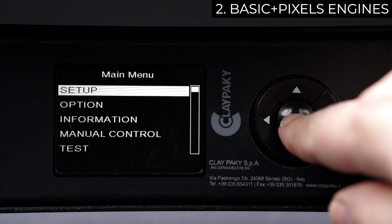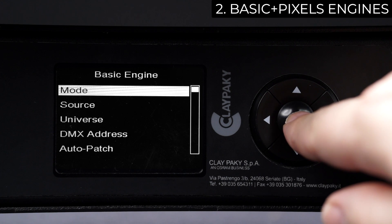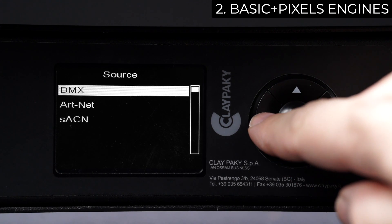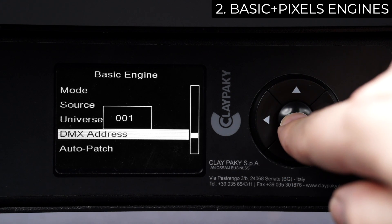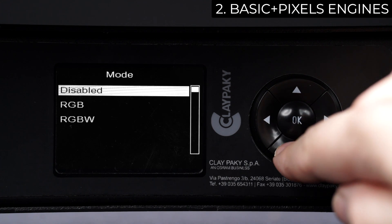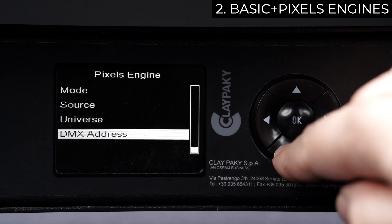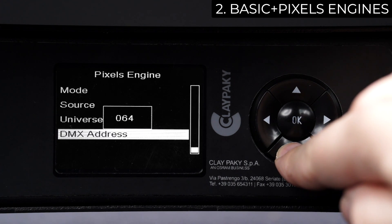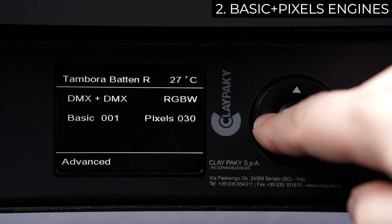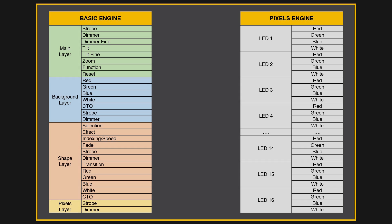Access the menu of the fixture and select Setup. Here, all fixture engines are listed. Select Basic Engine and set the parameters according to what is configured on the console so that they correspond to each other. Now go back to Setup, select Pixels Engine, set parameters and repeat the same procedure. The fixture now responds to console commands, enabling you to control channels included in both the Basic Engine and the Pixels Engine.